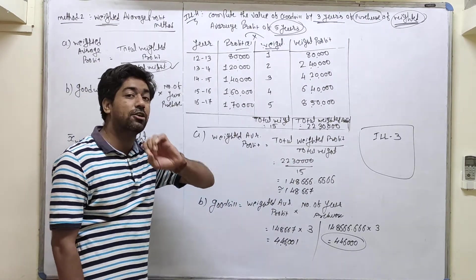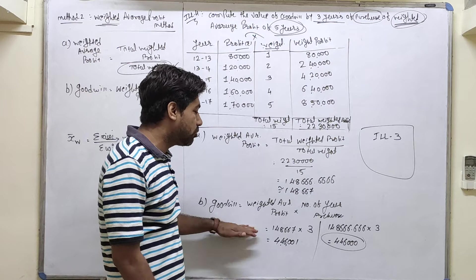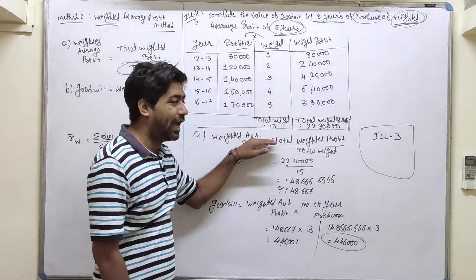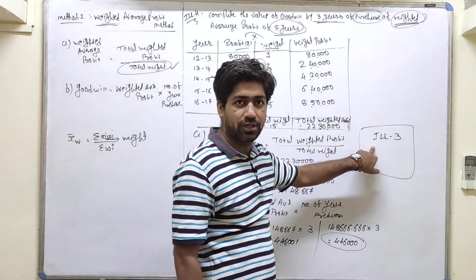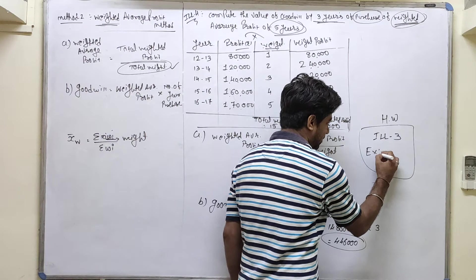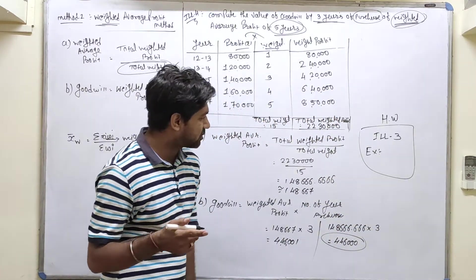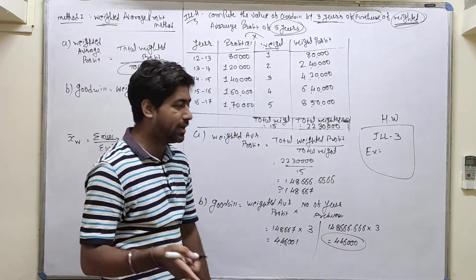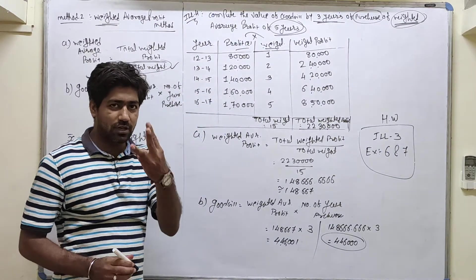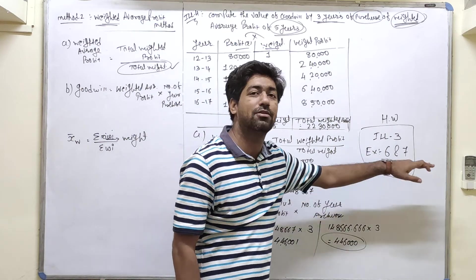Keep in mind: in Illustration 3, they do not ask you to calculate goodwill — only the weighted average profit. If the question specifies to calculate goodwill, then calculate it; if not, just calculate the weighted average profit. Illustration 3 is your homework. From the exercise, you also have to do Question Number 6 and Question Number 7. So three questions to complete: Illustration 3 and Exercise Questions 6 and 7.